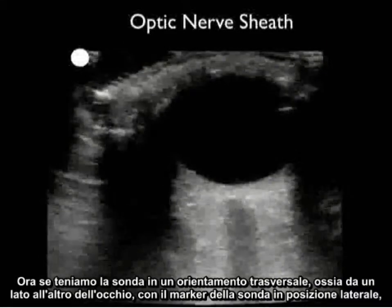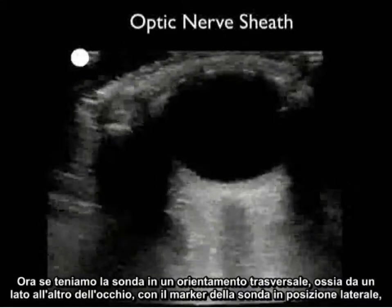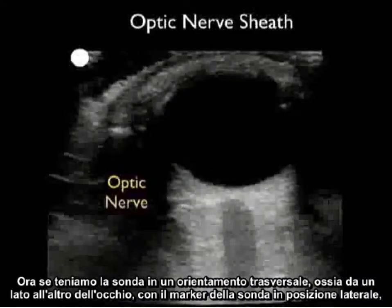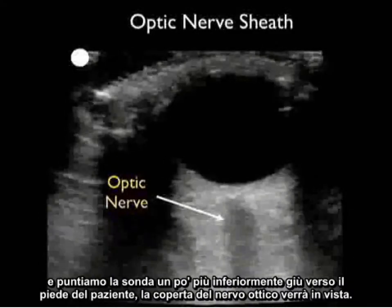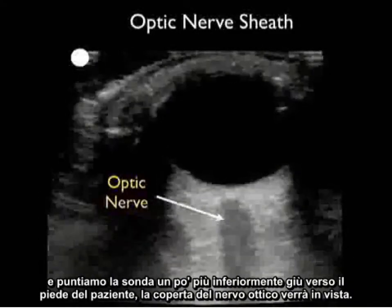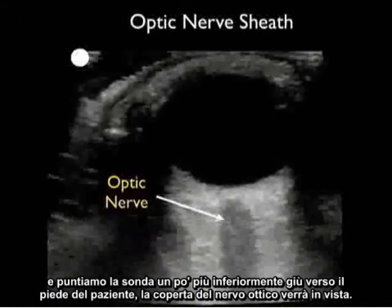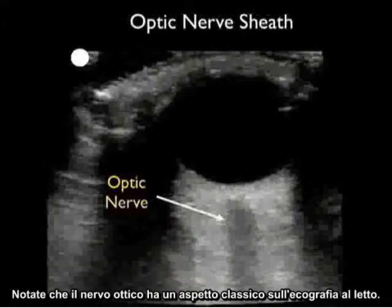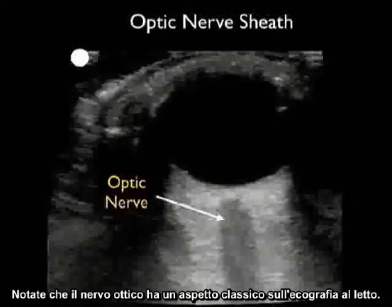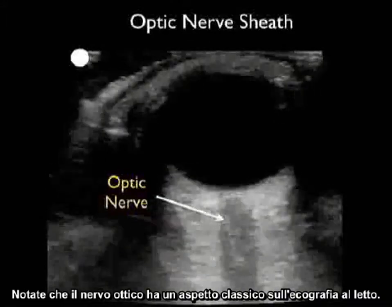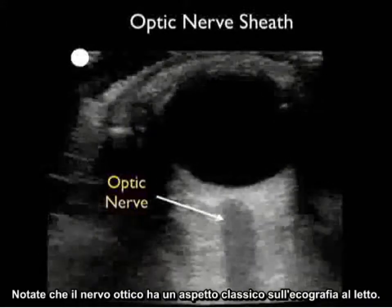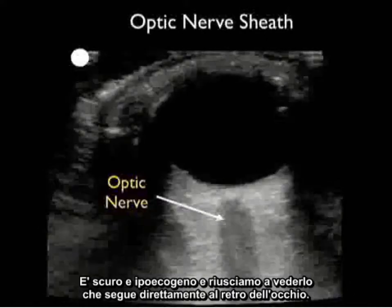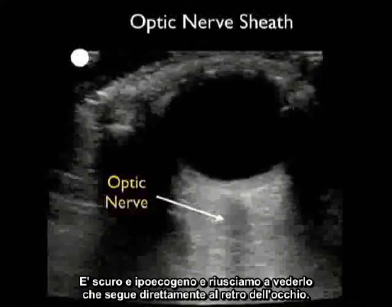If we have the probe in a side-to-side or transverse orientation across the eye with the probe marker lateral and aim the probe a little bit more inferiorly down towards the patient's foot, the optic nerve sheath will come into view. Note the optic nerve has a classic appearance on bedside ultrasound — it's dark or hypoechoic, and we can see it leading right up to the back of the eye.